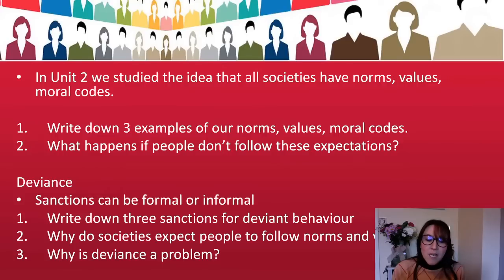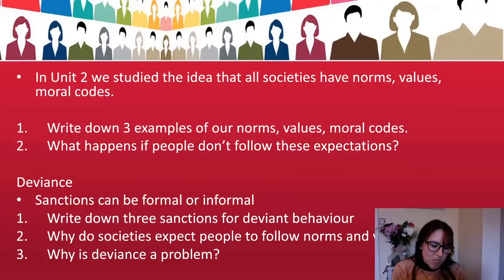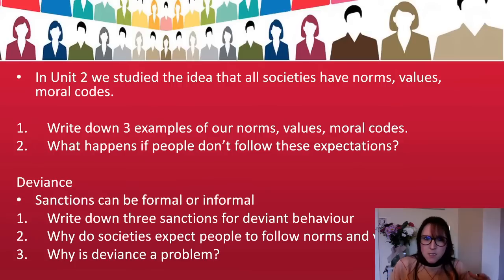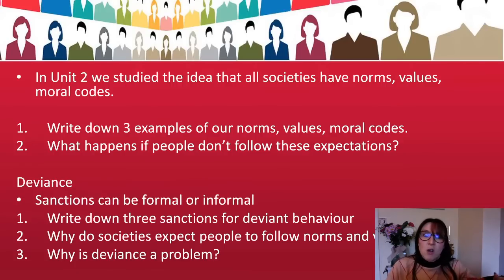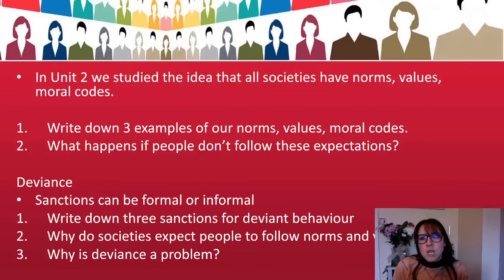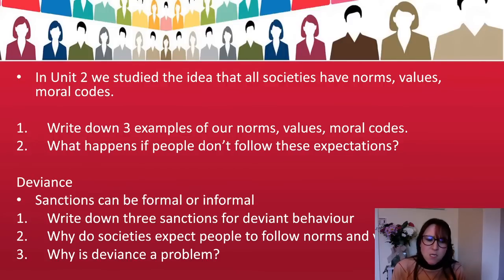Why is deviance itself a problem? Why is it a problem when people deviate? Because they create an imbalance in society. Certain deviances are things that do affect the public and other people, and so you cause a disbalance in society.